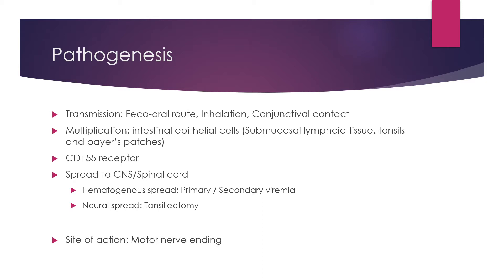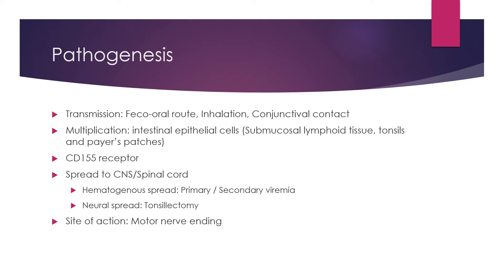The final target site for poliovirus is the motor nerve endings — the anterior horn cells of the spinal cord — which leads to muscle weakness and flaccid paralysis. Virus-infected neurons undergo degeneration; the earliest change is degeneration of the Nissl body. The virus can also be shed through the feces, which is important for laboratory diagnosis, where specimens like feces can be collected to isolate the virus.